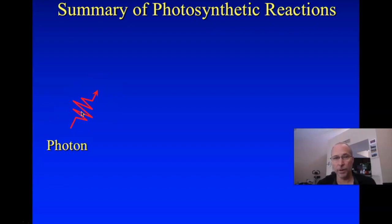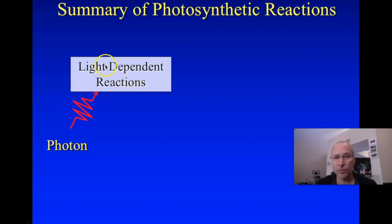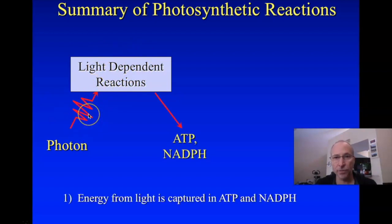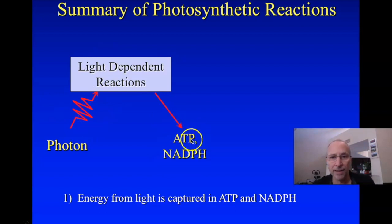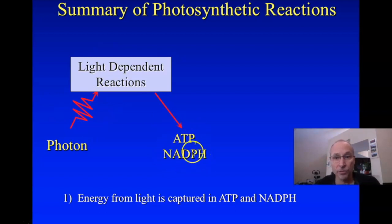We can't just make it disappear. However, the photon can disappear, and that's exactly what plants do. Plants absorb photons, take the energy from them, and use that energy to power a series of reactions that we call the light-dependent reactions. Those light-dependent reactions literally transfer the energy from the photon onto chemical potential energy in the form of ATP and this other molecule, NADPH.